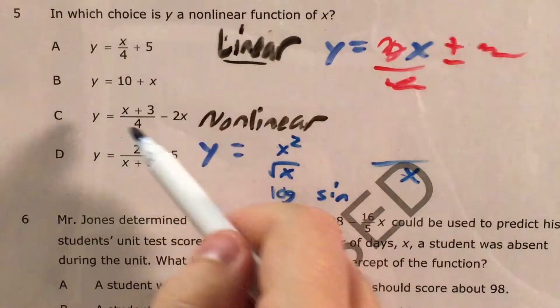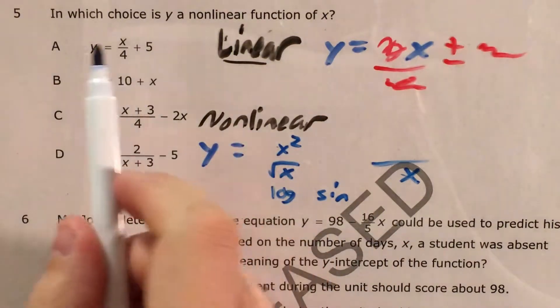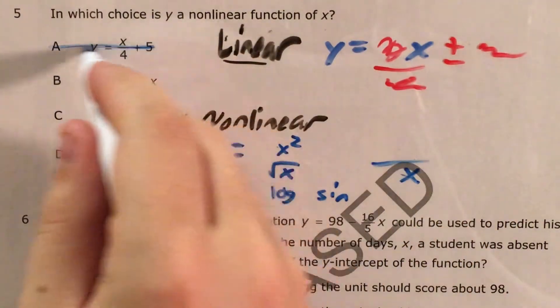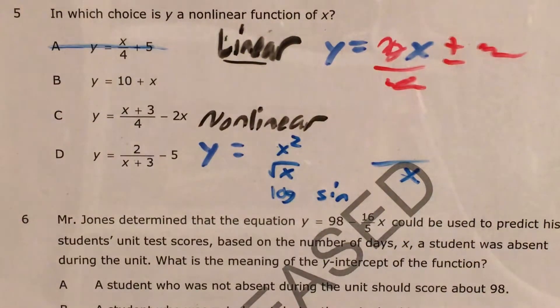So if we're going to use this framework to look through our answer choices, choice A, we have x over 4, x in the numerator of a fraction, so that's fine. It's linear, so it's not our answer.